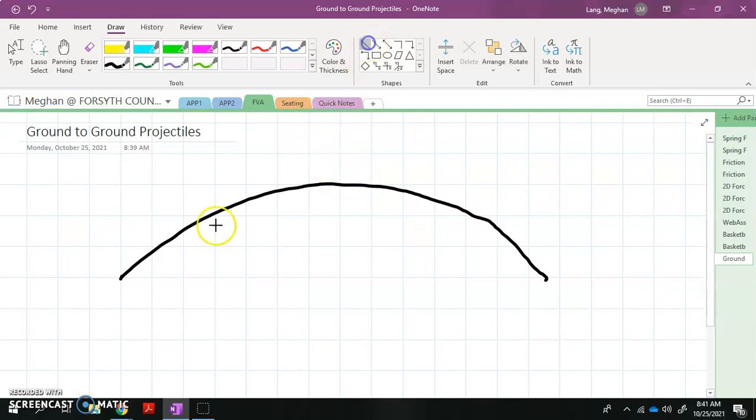So for our horizontal projectiles, we went from either the ground to the top of the projectile, the top of the parabola, and that's what we did when we did our basketball physics lab. Or we went from the top of the parabola down to the ground, which is what we did in example set one.